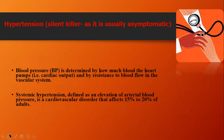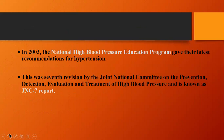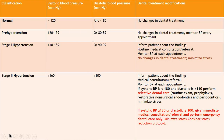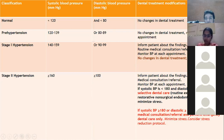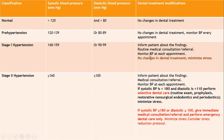Hypertension is an increased blood pressure and is considered a silent killer. It is determined by knowing the systolic and diastolic pressures, referencing the National High Blood Pressure Education Program and JNC 7 report. Pre-hypertension is defined as systolic 120–139 and diastolic 80–89. Stage 1 hypertension follows above these values, and Stage 2 hypertension is systolic 160 or more with diastolic above 100.